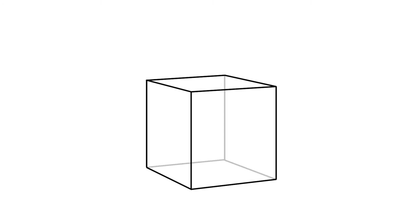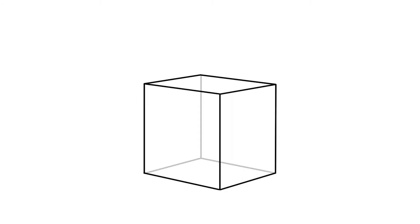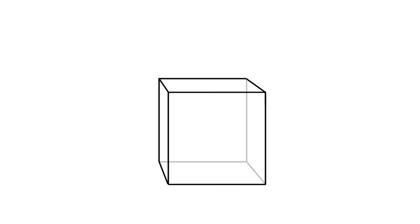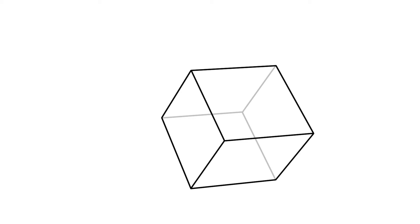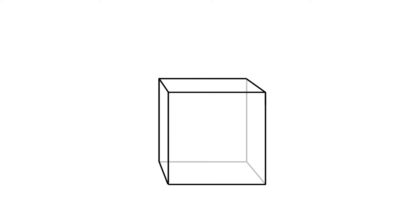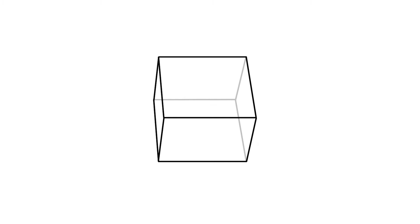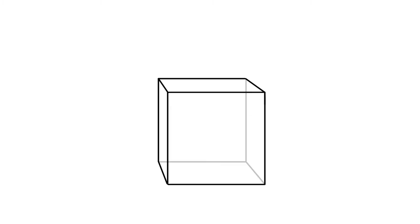Hey guys, welcome to my channel. This video is going to show you how to draw square and rectangular boxes in perspective. Drawing in perspective means you are drawing something to make it look 3D. Drawing 3D box illusions can be difficult to do correctly, especially if you want your boxes to be at a specific rotation or tilt. This video will show you how to draw a box at any horizontal rotation in perspective, and how to tilt a box on its side at any vertical rotation in perspective.